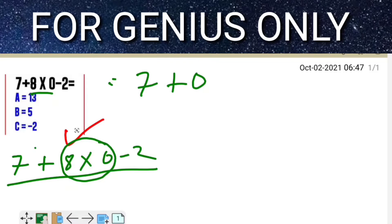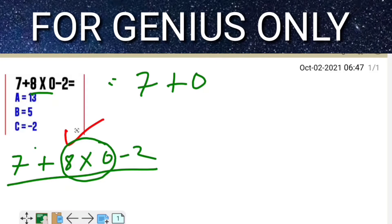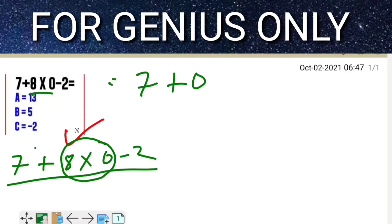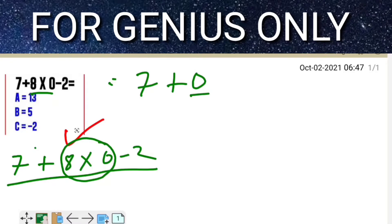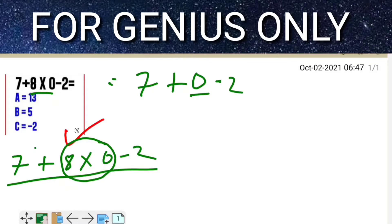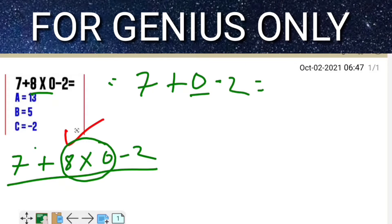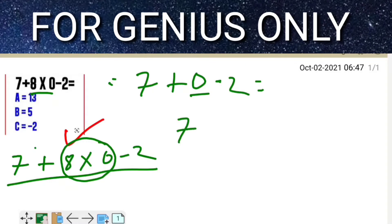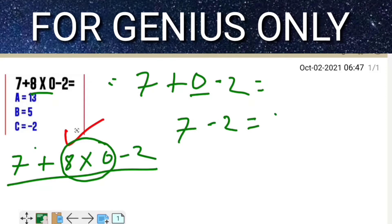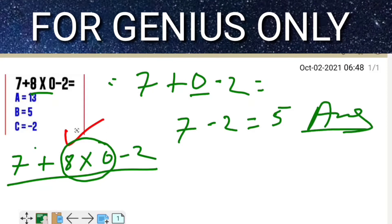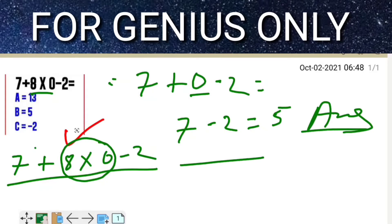You know very well anything multiplied by 0 equals only 0. So 8 × 0 = 0, and it becomes 7 + 0 - 2, which equals what? Here you can find 7 plus 0 minus 2 equals 5. So the exact answer is 5, no doubt, no hesitation.